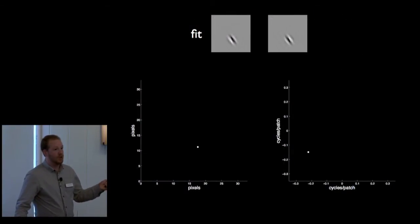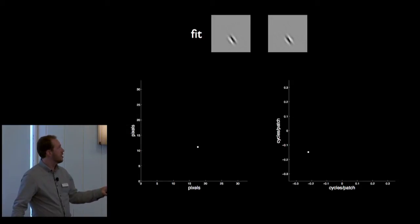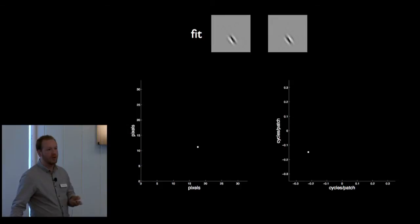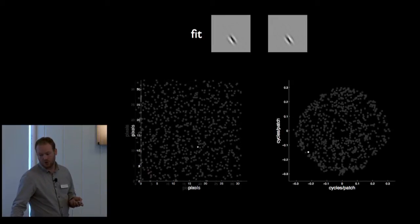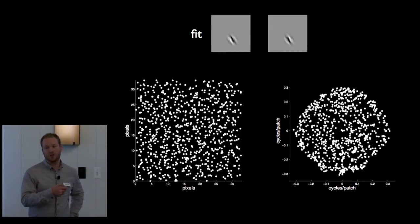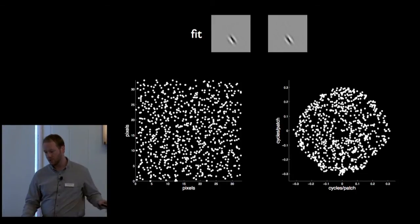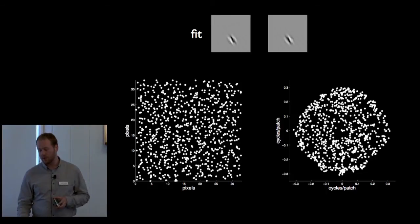We can look at the whole population of these first layer functions in terms of their Gabor parameters. Because these Gabor parameters are low dimensional with nice correspondences, we can represent the position in space of each function as a dot, and its orientation and spatial frequency as a dot in the 2D Fourier plane. We can represent all of the learned functions, with each dot being a different first layer function. You can see there's a tiling of visual space with dots at every single position, and a tiling of orientation and spatial frequency. This type of plot will be helpful in describing what the second layer has learned.